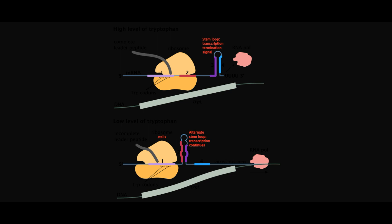If tryptophan is abundant, then the ribosome does not stall, inhibiting the two-to-three stem loop, which in turn allows for the three-to-four stem loop to form. The premature termination of transcription is called transcription attenuation, and it allows for more stringent gene regulation.